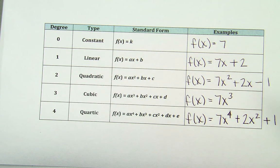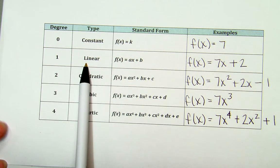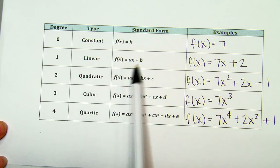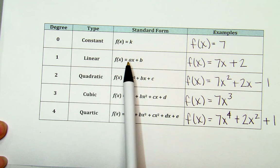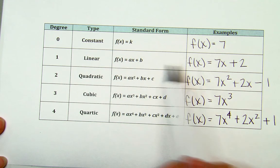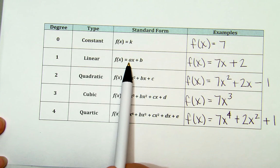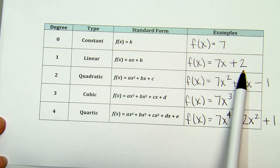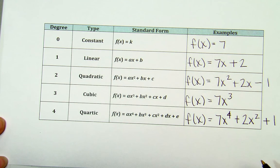The next degree, which is 1, gives us a linear function. We know this to be f(x) = mx + b, but I put 'a' there. So it really doesn't matter if it's m or a, it just means that there's going to be a real number coefficient. So this example is f(x) = 7x + 2. That's an example of a linear function.